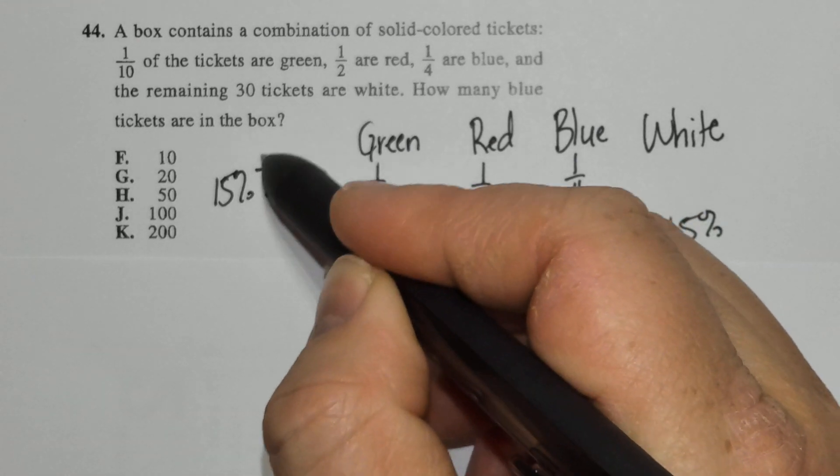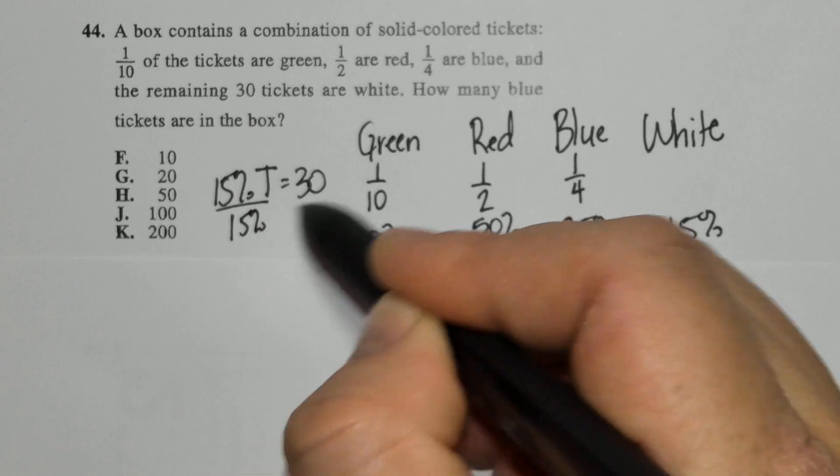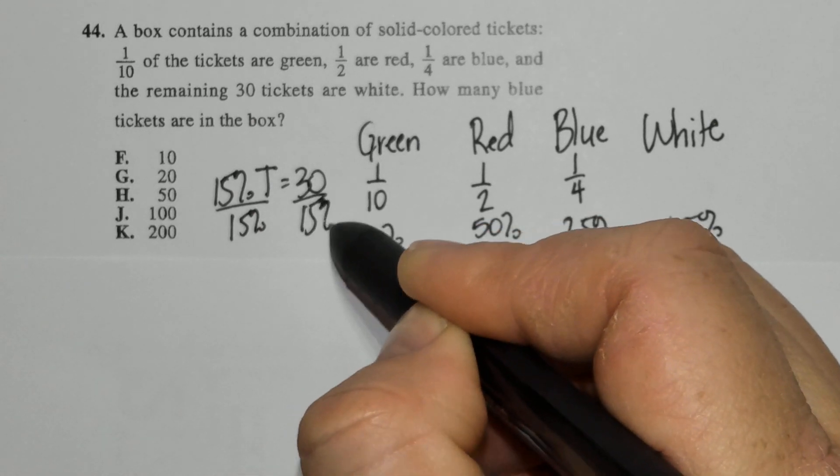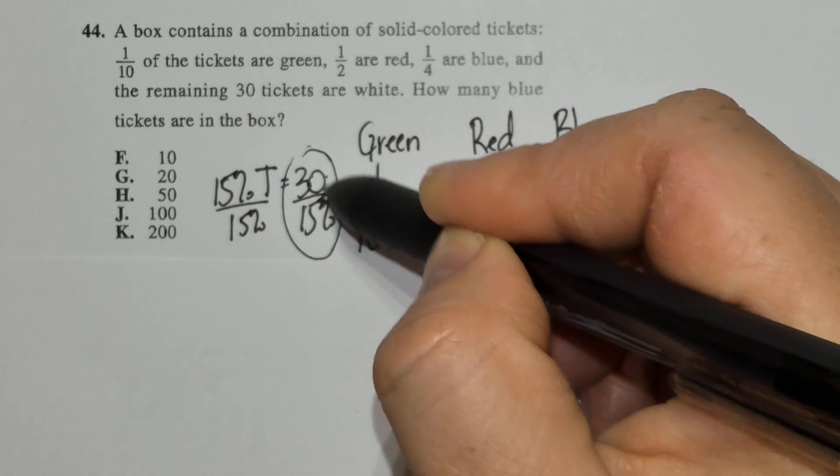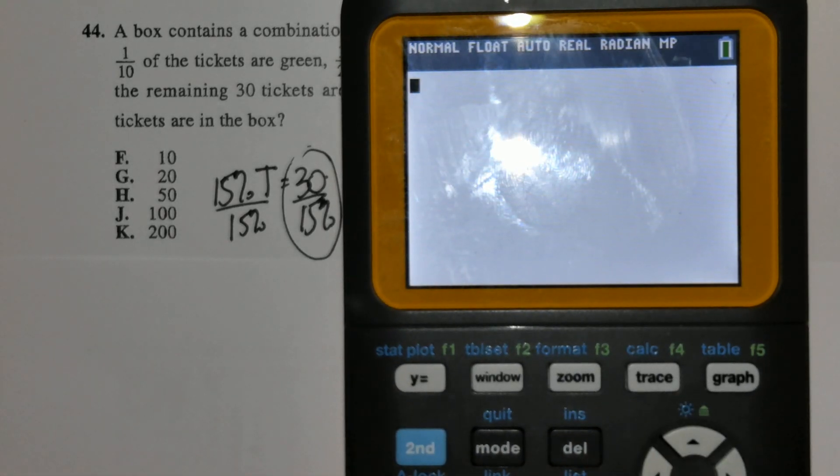So if I want to isolate T to find out the total number of tickets, I'm going to divide by 15%. Now, to plug this into your calculator, 30 divided by 15%, I'm going to switch it back to a decimal. So 30 divided by 15%.